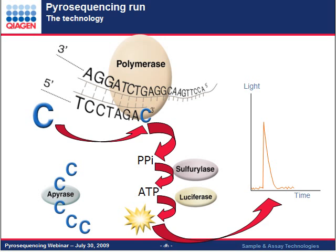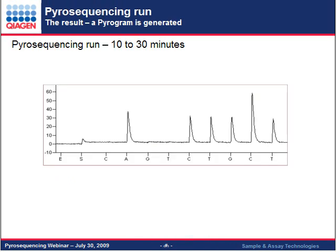This is what the pyrogram looks like at the end of your run. Anytime there is a base incorporation, we see a peak; if there was no incorporation, we see a flat line. Anytime there are more than one incorporation, we see a higher peak. So I can read this sequence as A, C, T, G, C, C, T. The software can analyze this for you and tell you what the sequence is.